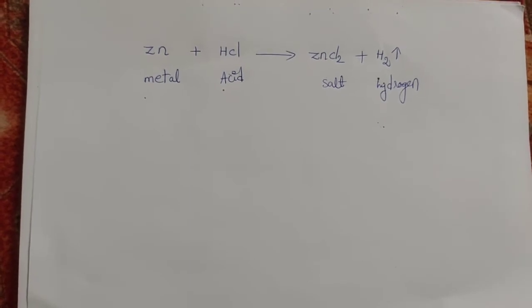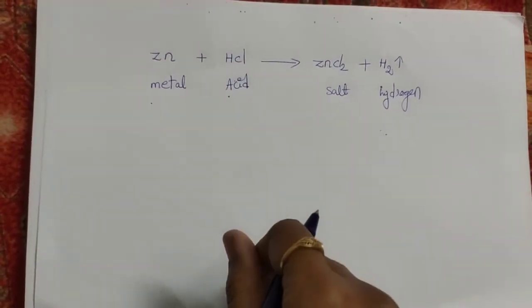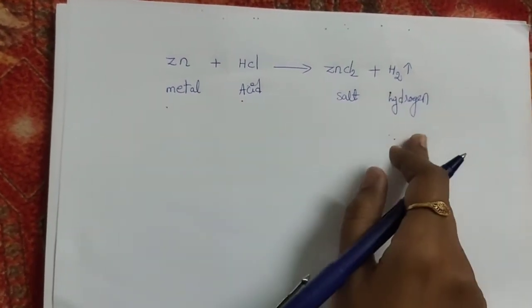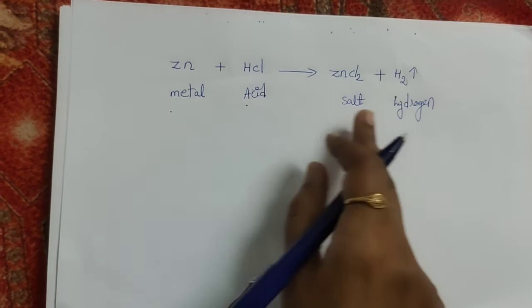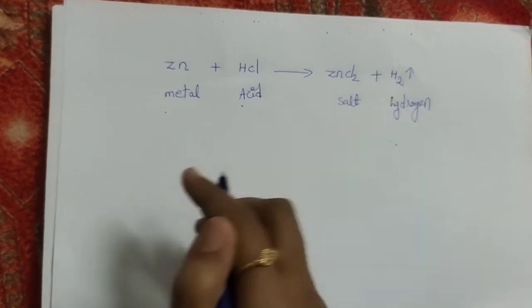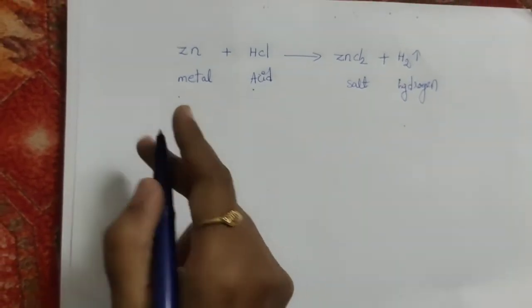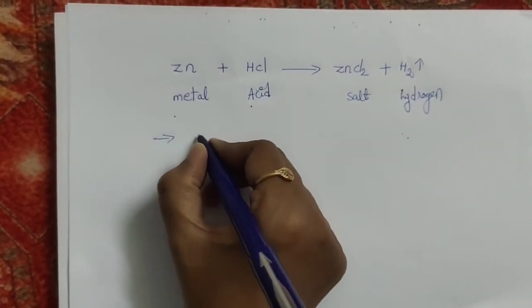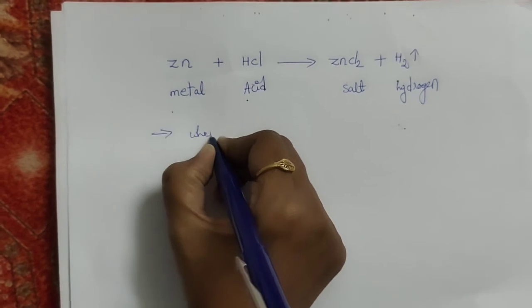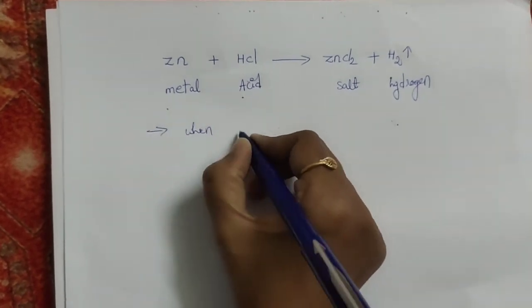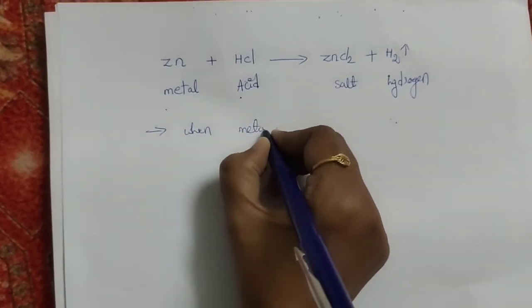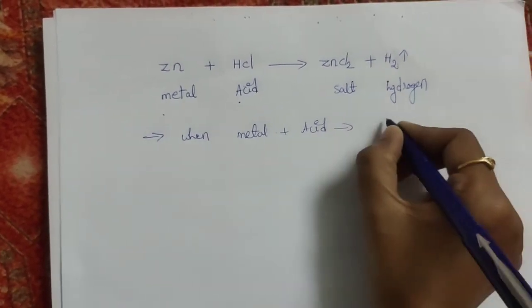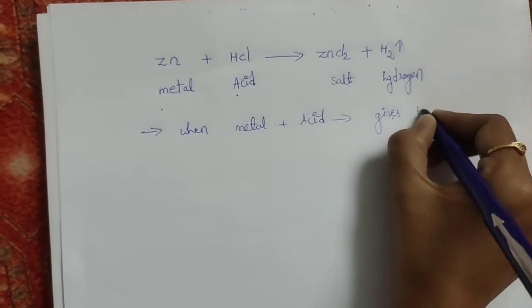After the reaction is done, it results in salt formation. This is one of the key reactions. The first point to remember is that when a metal reacts with HCl acid, it mainly produces hydrogen gas.